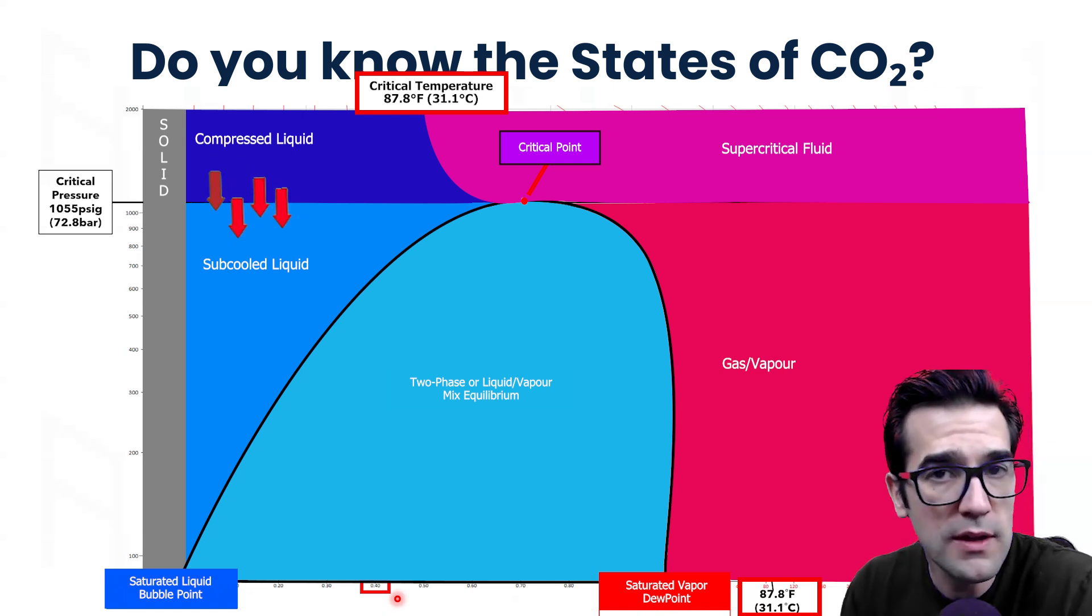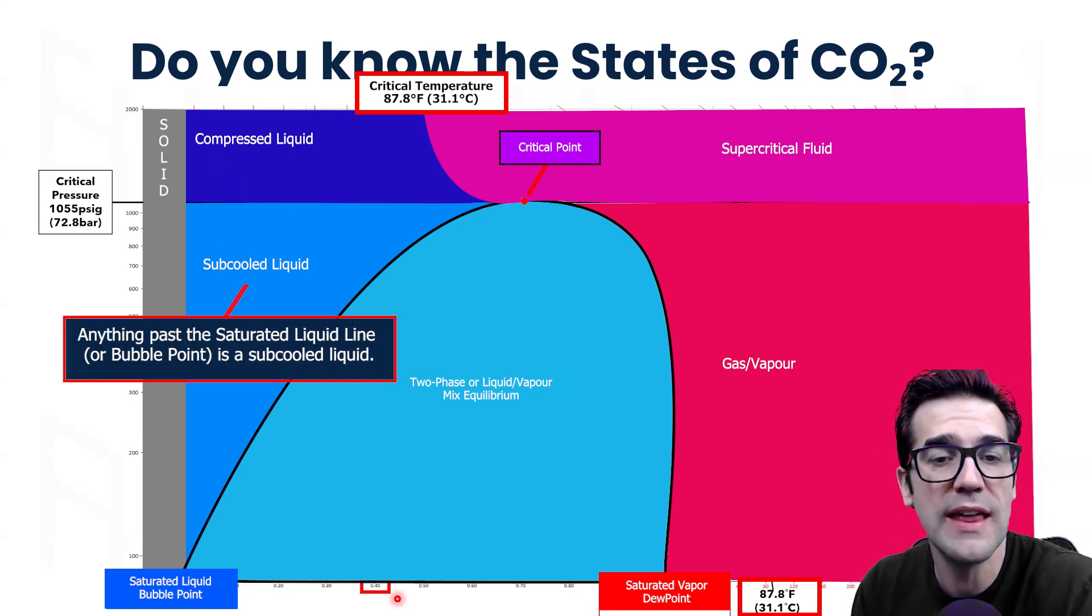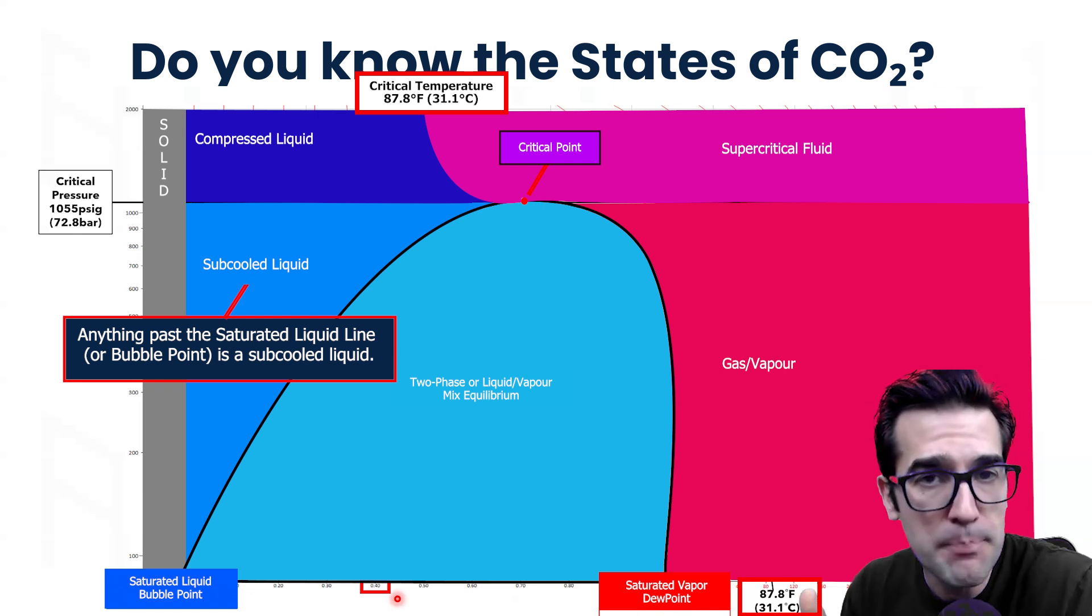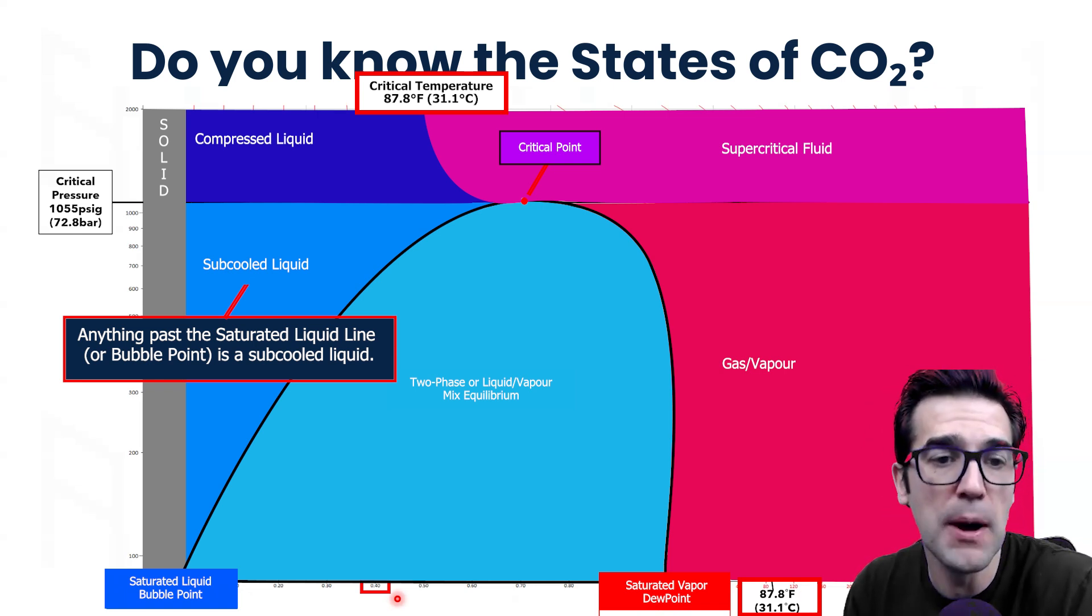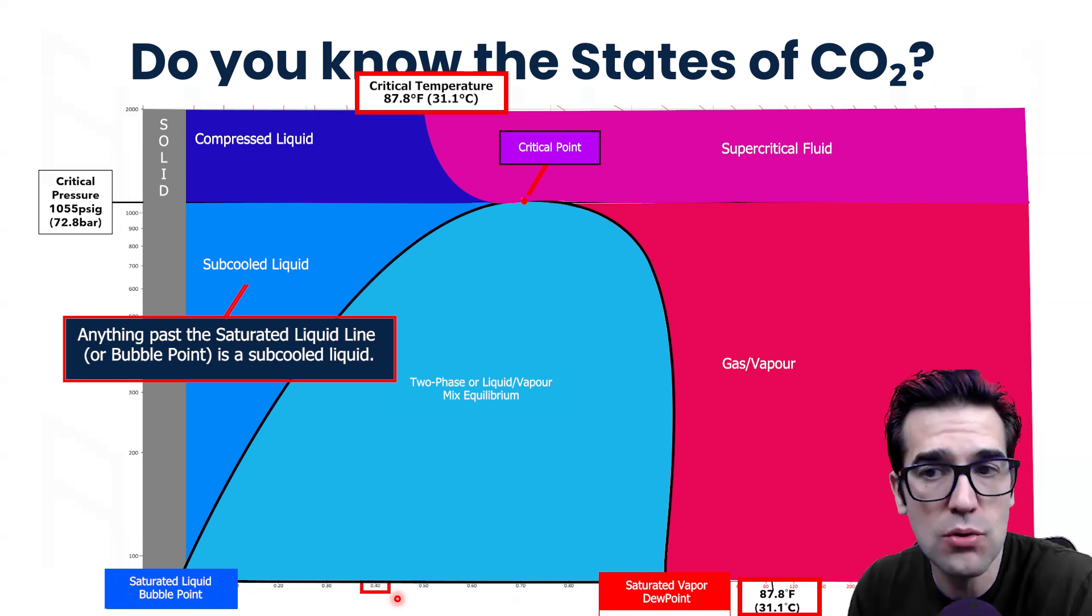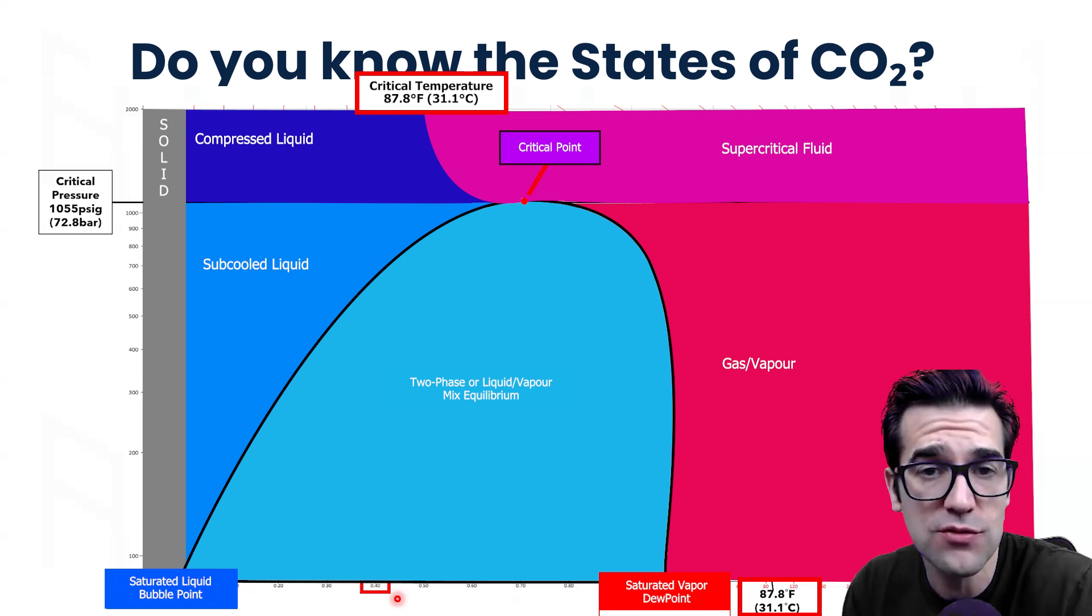So designers will really be diving into this and engineers. As a technician, you don't really need to dive into it that deep. But now it's a subcooled liquid. And that's anything past the saturated liquid line, the bubble point line. This is what all the states of CO2 are and how it's traveling through the system.